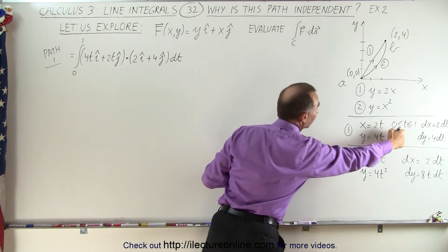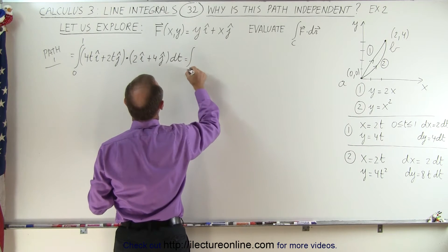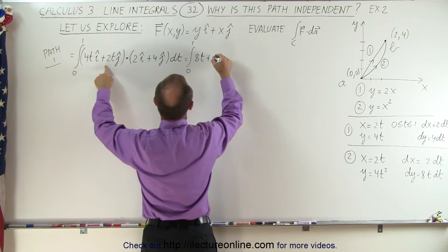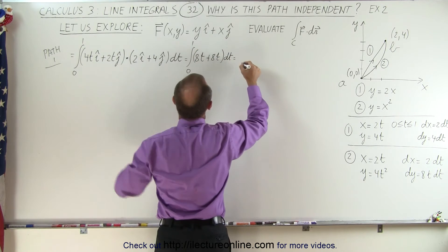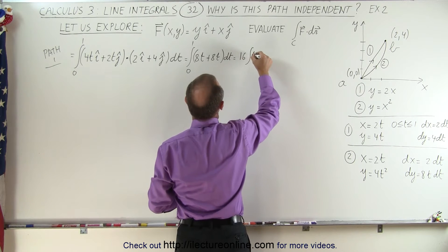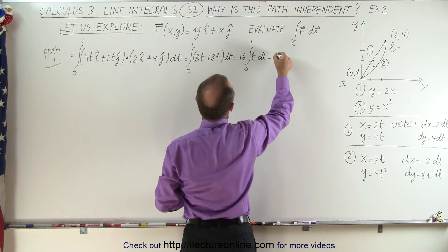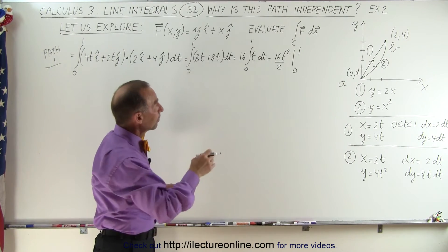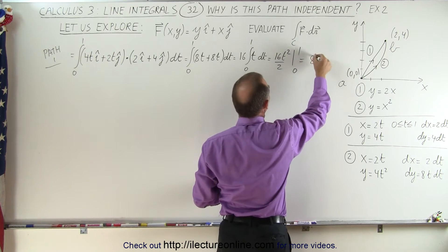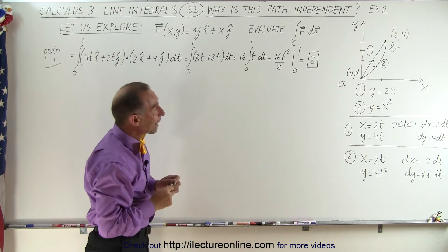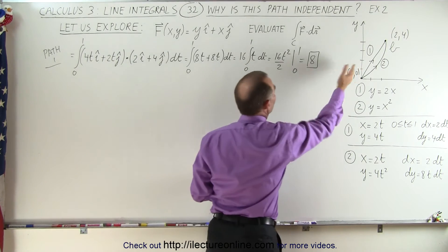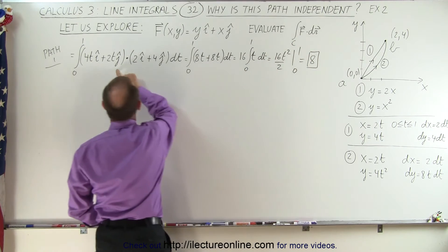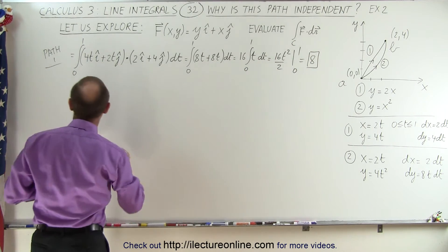This integral runs from 0 to 1. Multiplying the i components together gives 8t, and multiplying the j components gives 8t, so we have the integral from 0 to 1 of 16t dt. That equals 16 times t squared over 2, evaluated from 0 to 1. Plugging in the lower limit gives 0, and the upper limit gives 16 divided by 2, which equals 8. Traveling along path 1 from (0,0) to (2,4), the line integral equals 8 — a scalar quantity from the dot product.